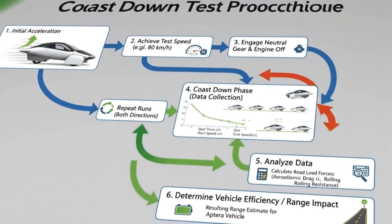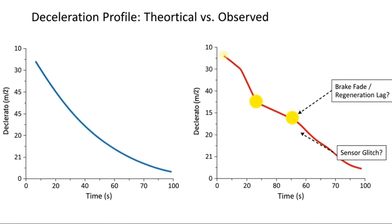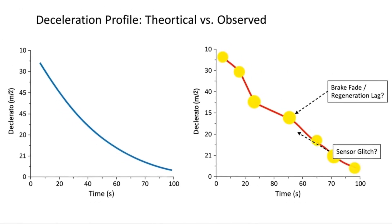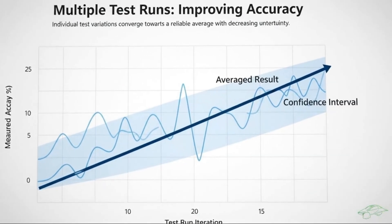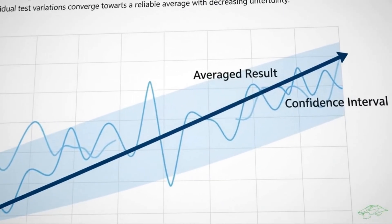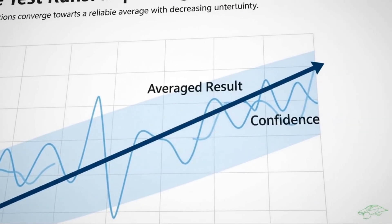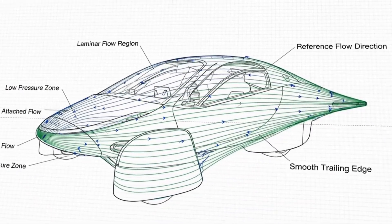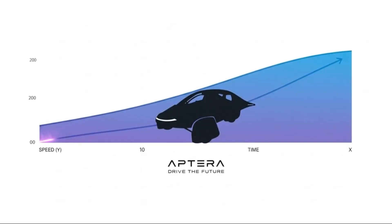The details matter just as much as the overall form. The wheel fairings are sculpted to align perfectly with airflow. The front wheels taper inward, then outward, guiding air instead of disrupting it. The rear wheel sits along the center line, where bodywork ahead of it manages airflow before it ever touches rubber. Eliminating the fourth wheel reduces one entire source of drag and rolling resistance. Nothing here is accidental. Every surface exists for a reason.